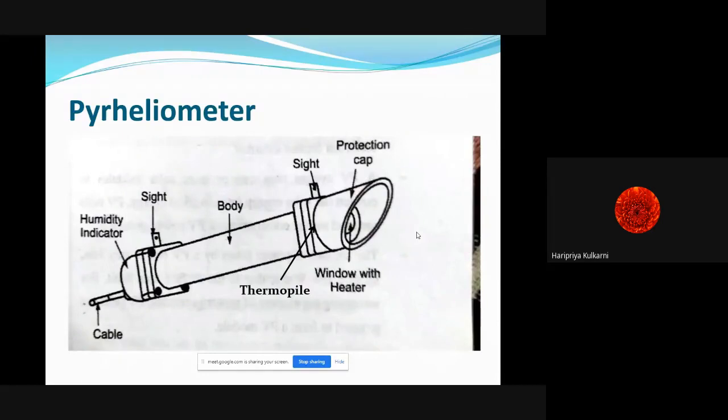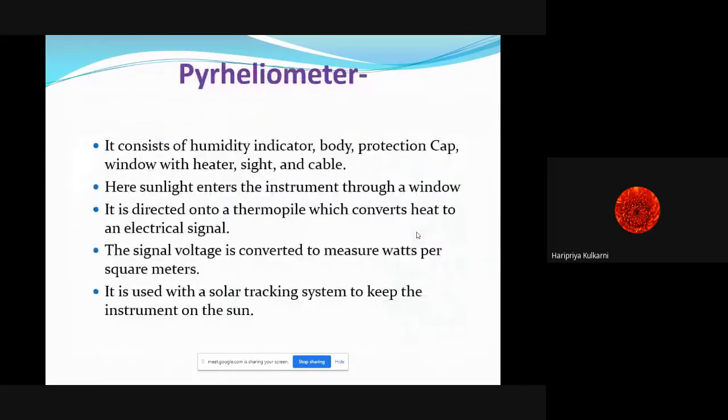It consists of a humidity indicator, body, protective cap, and window with heater - these are constructional elements. Sunlight enters the instrument through a window. There is a thermopile which converts it into electrical signal, electrical voltage.